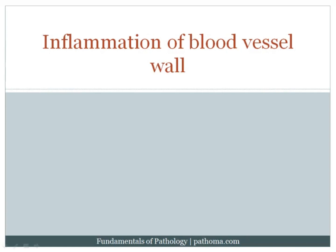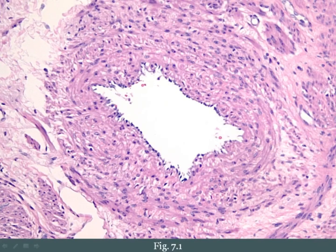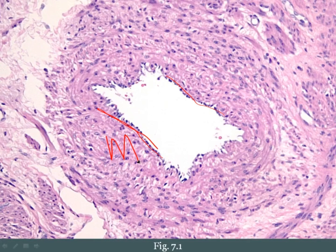The wall of the blood vessel is composed of three layers: the intima, the media, and the adventitia. I've included a normal artery in your textbook to remind you of these three layers. The innermost layer, shown in dark blue, represents the intima, which is composed of endothelial cells sitting on a basement membrane. Underneath the intima is the media, composed of smooth muscle. Outside of the media is the adventitia, the connective tissue layer.